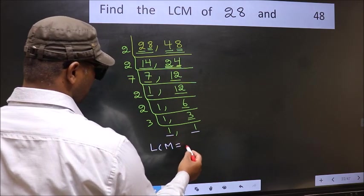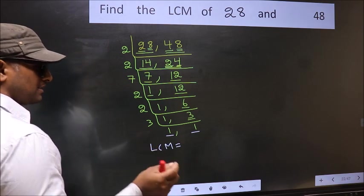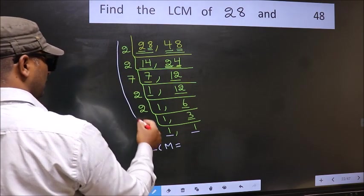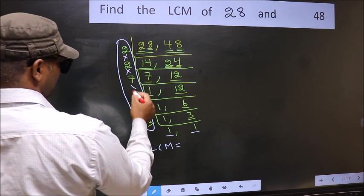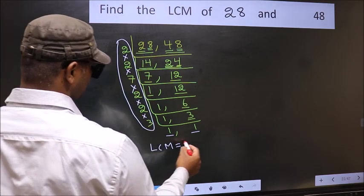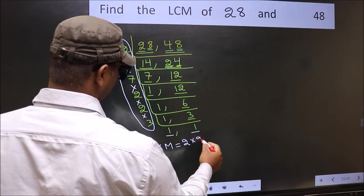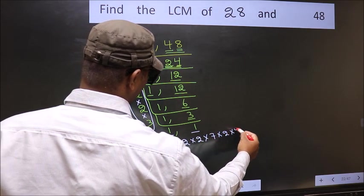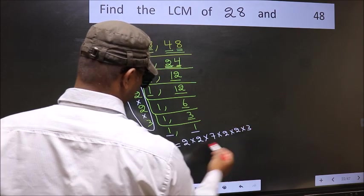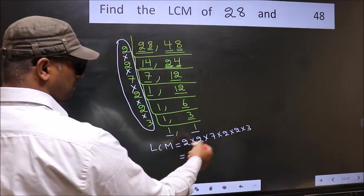So our LCM is the product of these numbers. That is 2 into 2 into 7 into 2 into 2 into 2 into 3. So let us multiply these numbers.